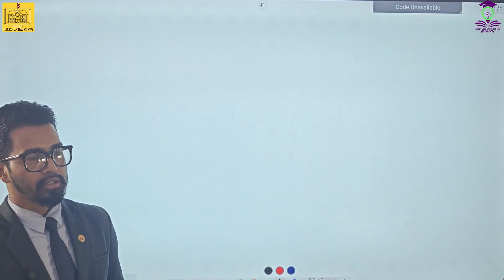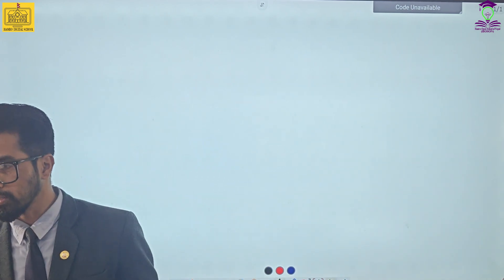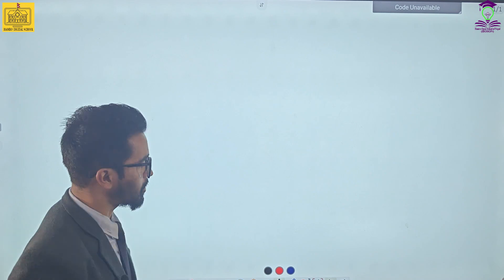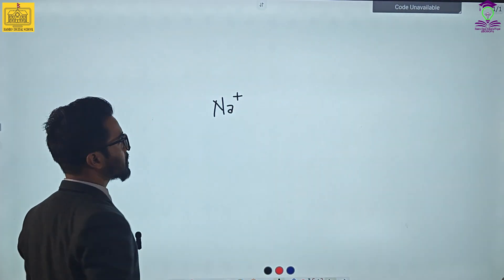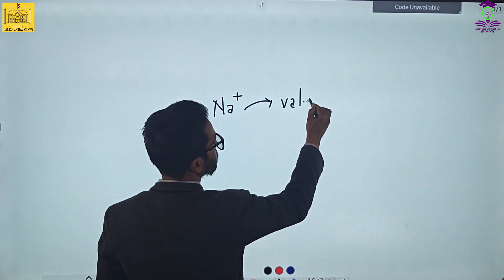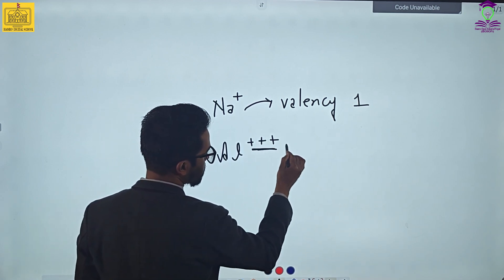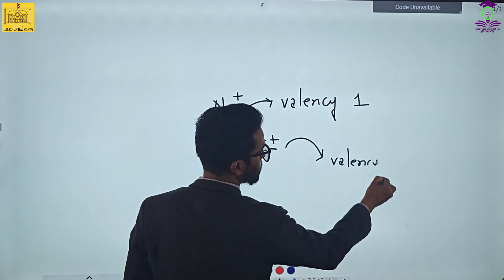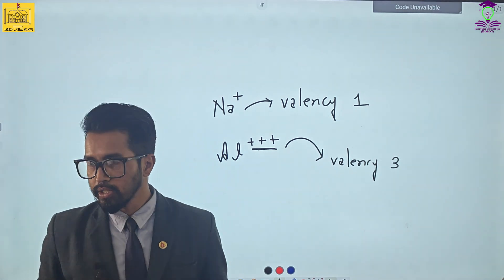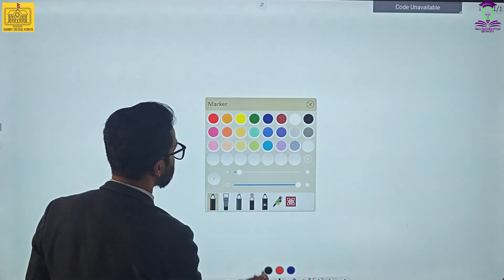Hello everyone, welcome to Hamlo Digital School. Today you are going to learn about the radicals, types of radicals, and how they are combined with the negative parts to form chemical compounds. Radicals are charged particles — they may be positive ions or negative ions. You need to remember what types of radicals are involved in chemistry, how they are categorized by charge, and how you determine valency using the charge. For example, Na⁺ has valency 1, and Al³⁺ has valency 3. So charge determines valency.